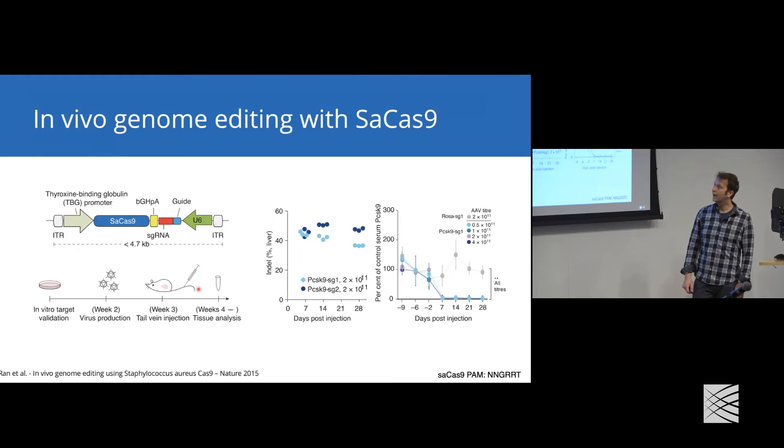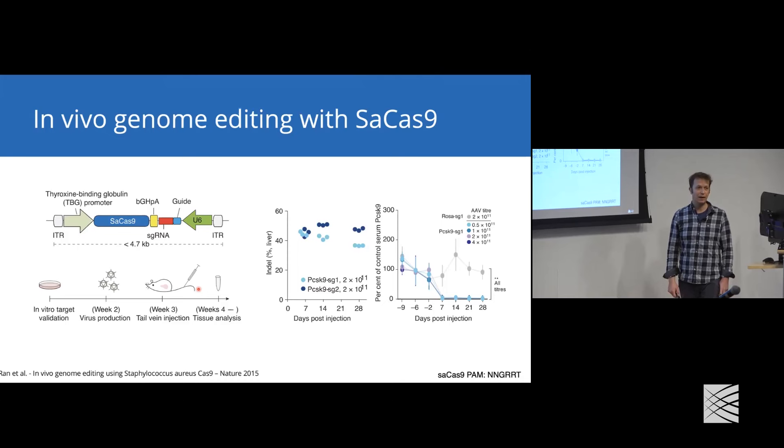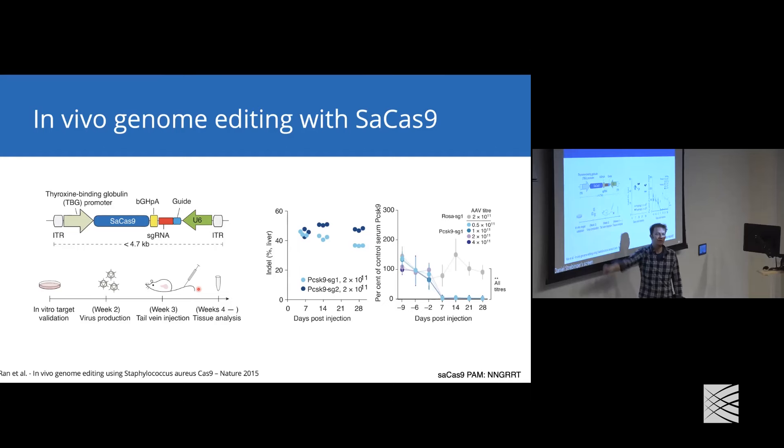One problem with SpCas9 is it's very large. A lot of viruses we use for delivering payloads in the lab and clinic are based on adeno-associated viruses, which have a fairly limited cargo capacity of 4.7 kilobases. Luckily, nature has a solution: Staph aureus Cas9. Staph aureus Cas9 is slightly smaller than SpCas9. Using Staph aureus Cas9 fused to nuclear localization signals and a U6 promoter driving single-guide RNA expression, we can package all of this into one AAV.